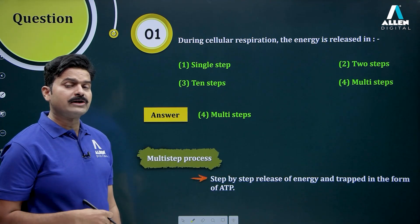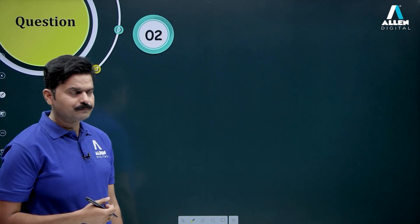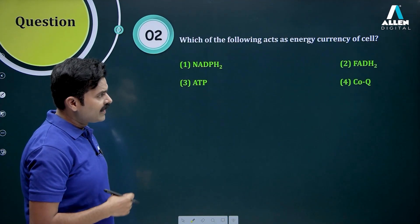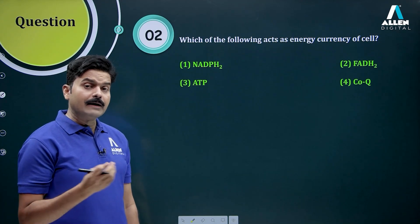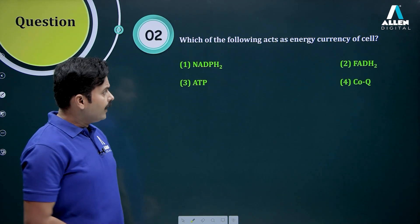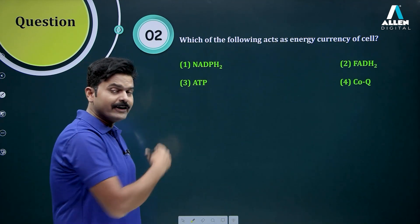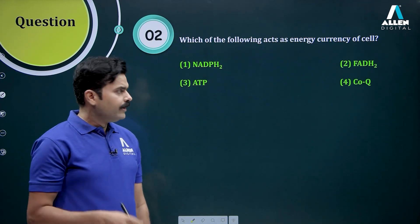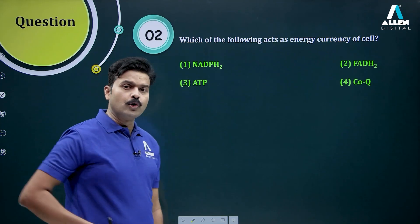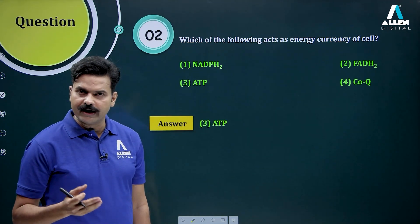Question number two: which of the following acts as the energy currency of the cell? Is it (1) NADPH2, (2) FADH2, (3) ATP, or (4) COQ? The answer is option number three — ATP.